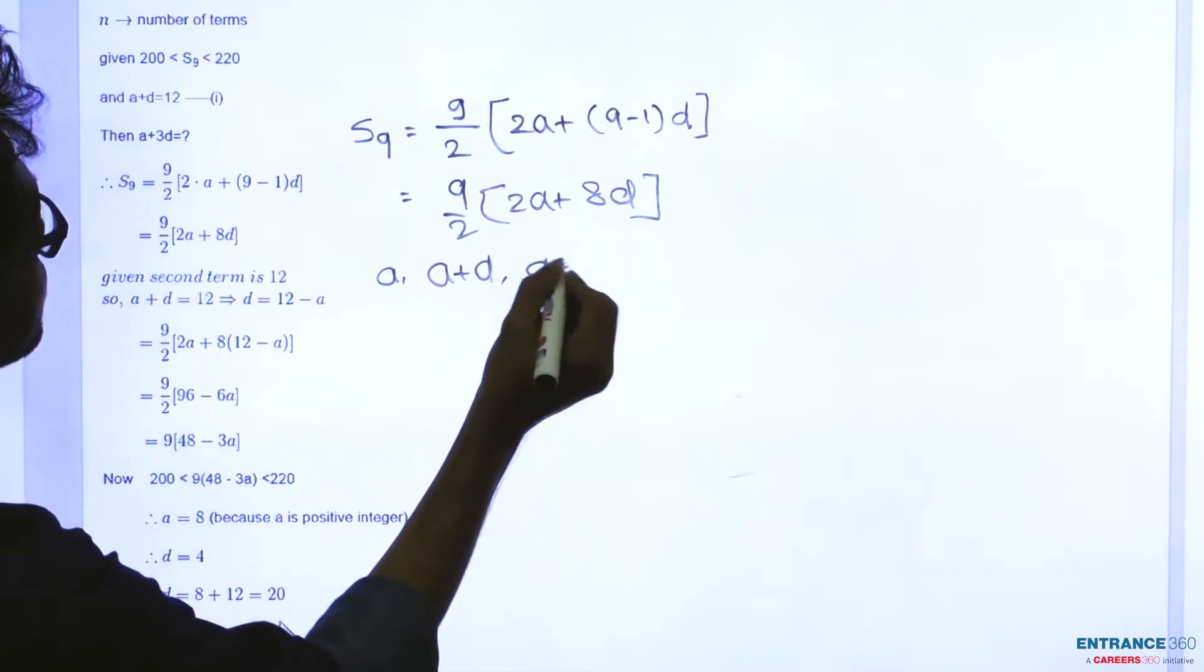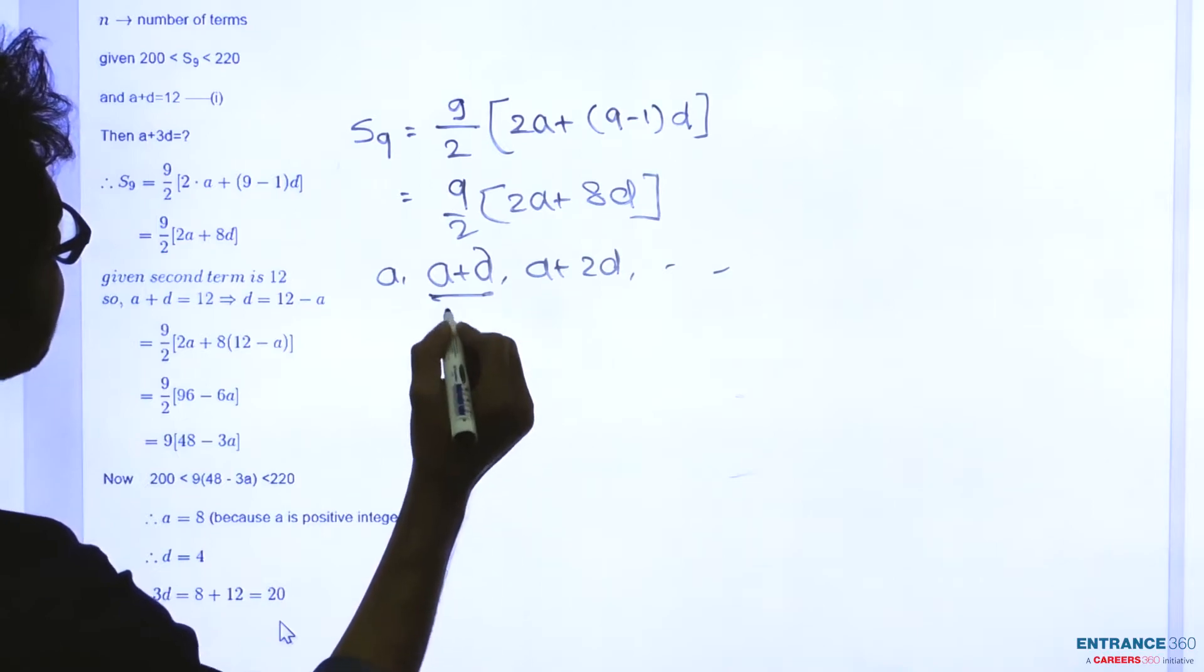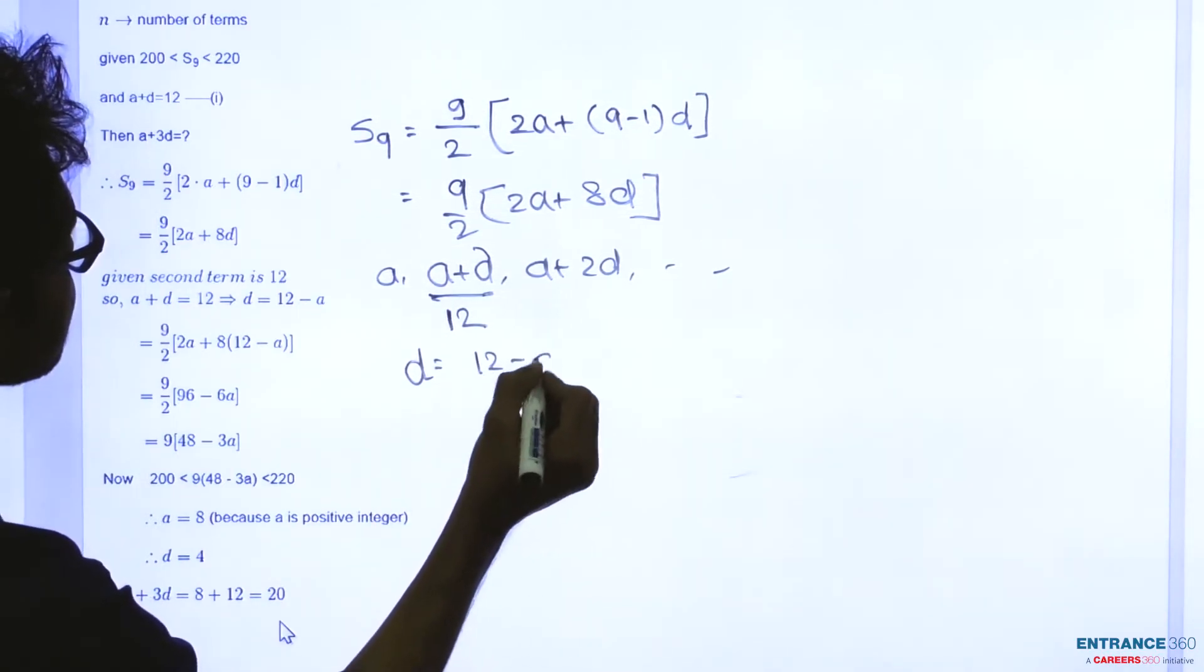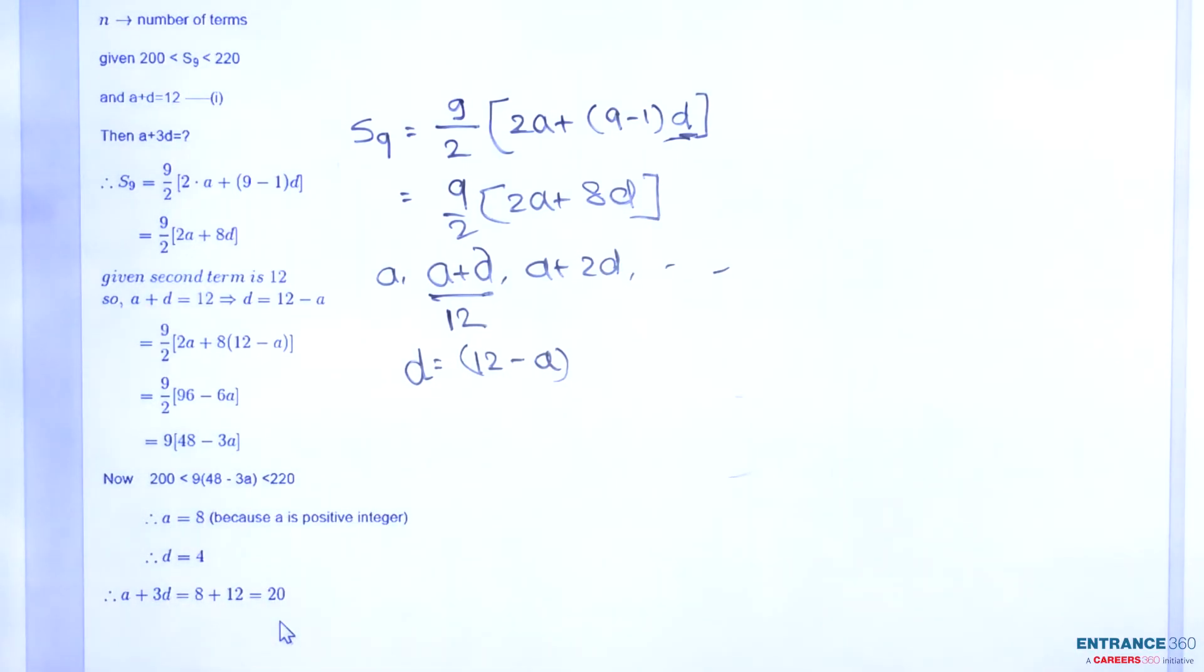The second term is a + d, where a is the first term. Given that a + d = 12, we have d = 12 - a. We substitute d = 12 - a into our formula and solve.